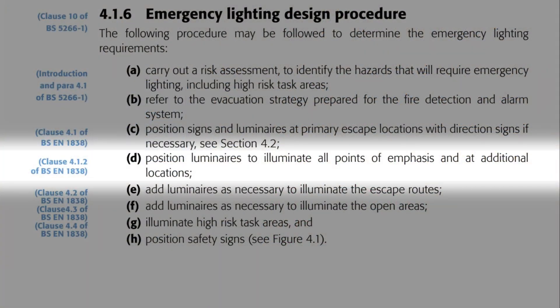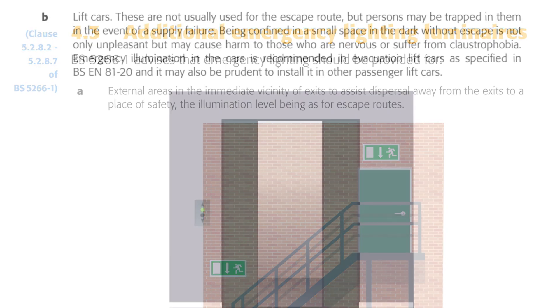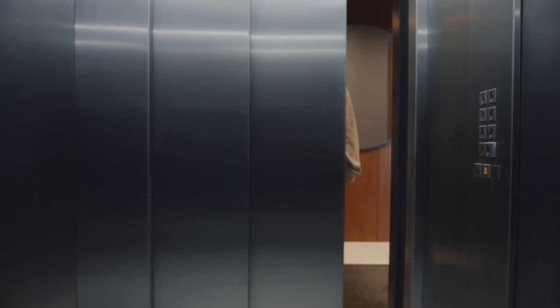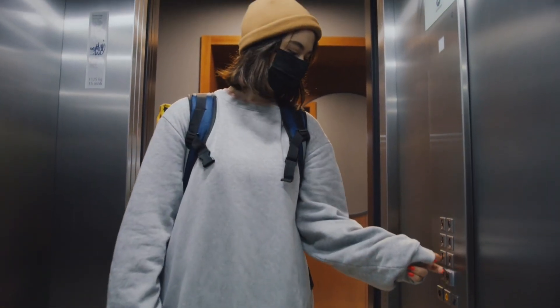Indent D also mentions additional locations covered in their own subheading in the guide. The first re-emphasizes emergency lighting outside emergency exits with sufficient lighting to get people to safety, noting that the illumination level should be the same as escape routes. Lifts also require emergency lighting — even though they're not generally used in emergencies, people may be trapped in them if the power fails and emergency lighting will help them stay calm.